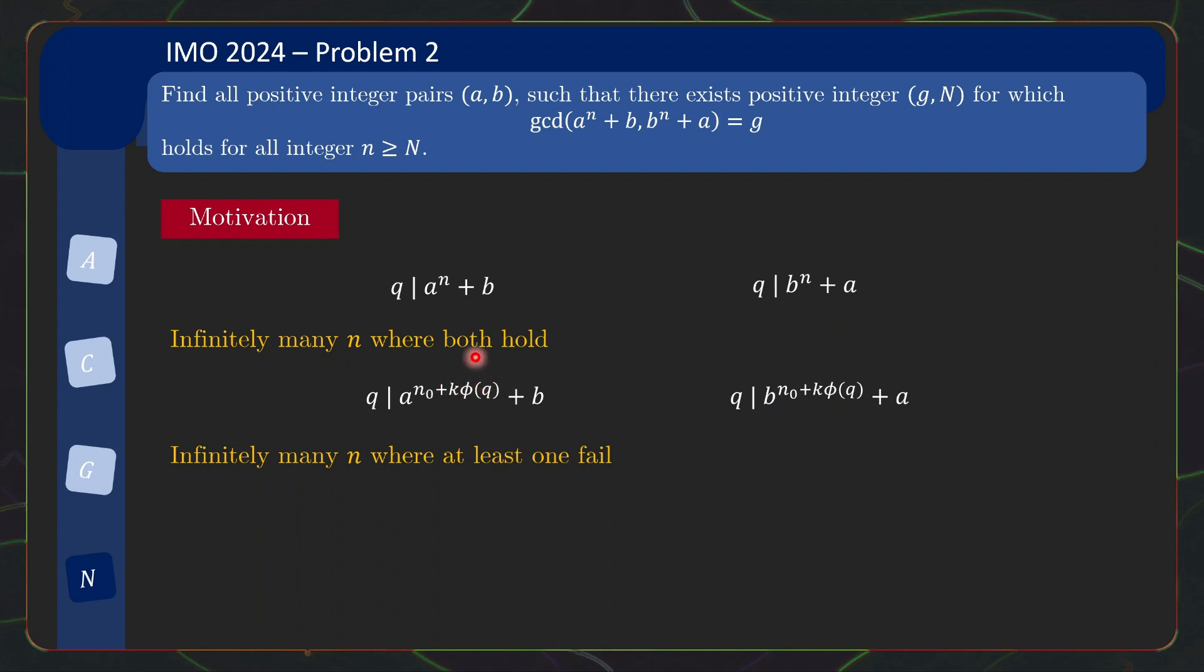Because a^φ(q) ≡ 1 mod q, assuming a and q are coprime. So I did not write this now, but to use this, you need a and q being coprime. So we do have infinitely many indices where these two divisibilities will hold.